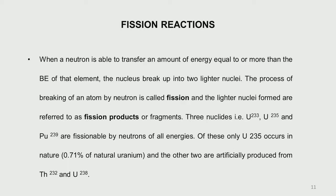The fissionable elements are uranium-233, uranium-235, and plutonium-239. These are fissile — fissionable by neutrons of all energies. Importantly, out of these three, uranium-235 alone is found in nature. Uranium-233 is not found in nature but is obtained by converting thorium-232 in a nuclear reactor. Similarly, plutonium-239 is manmade — uranium-238 absorbs a neutron and gets converted to plutonium-239 after a series of radioactive decays. So uranium-233 and plutonium-239 are artificially produced fissile isotopes.